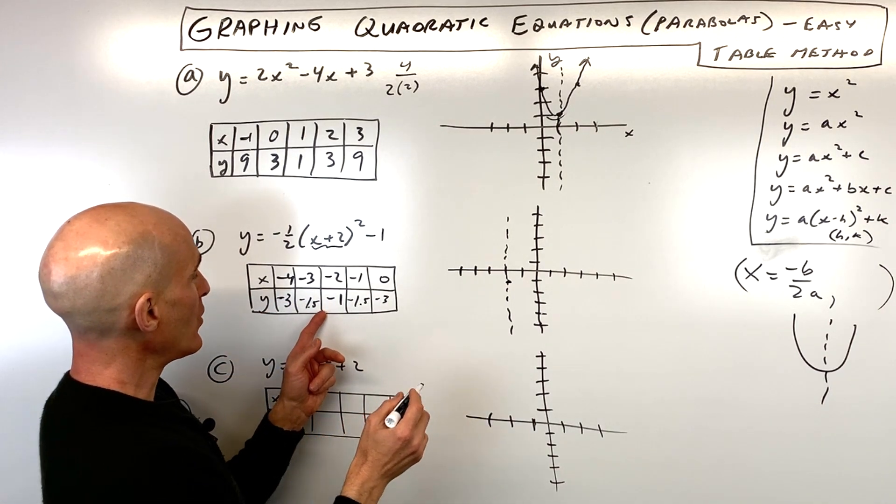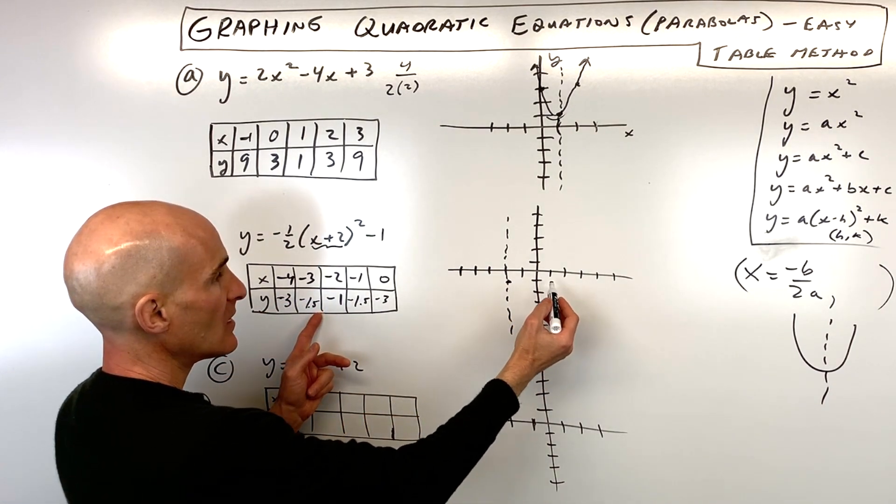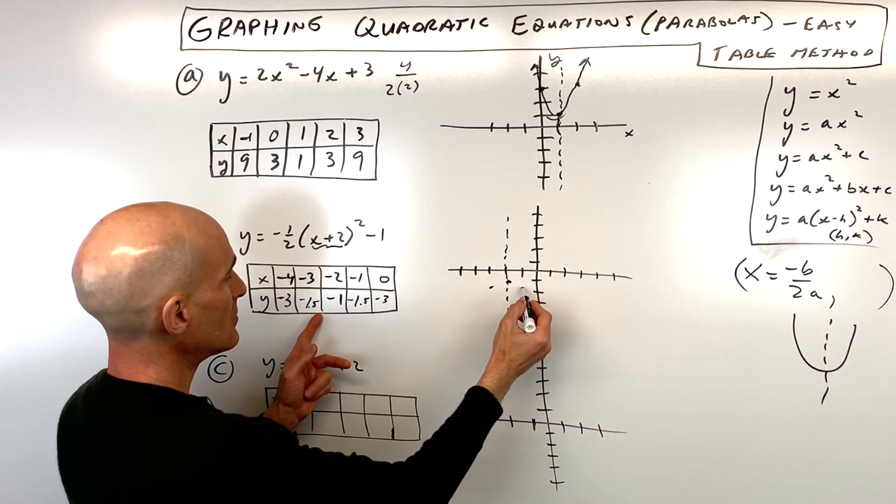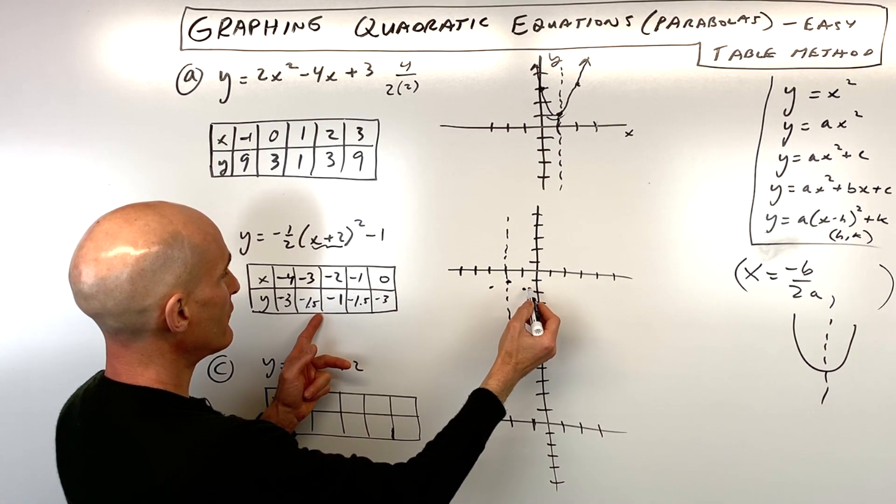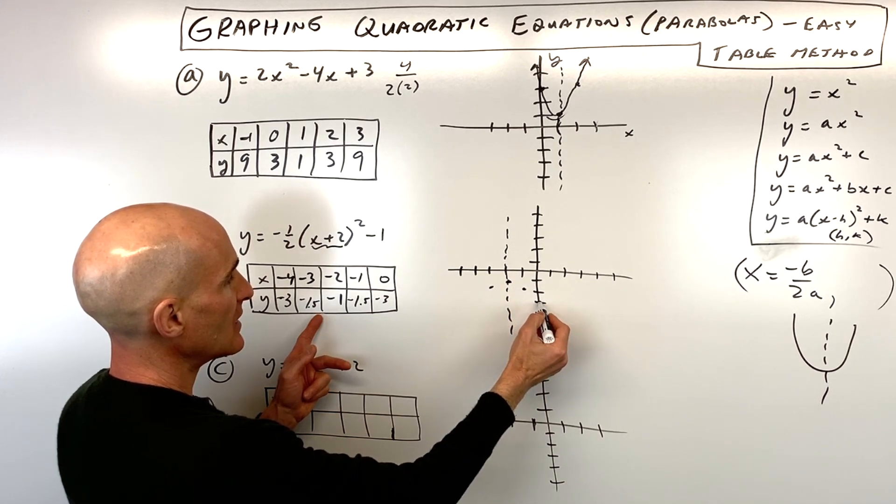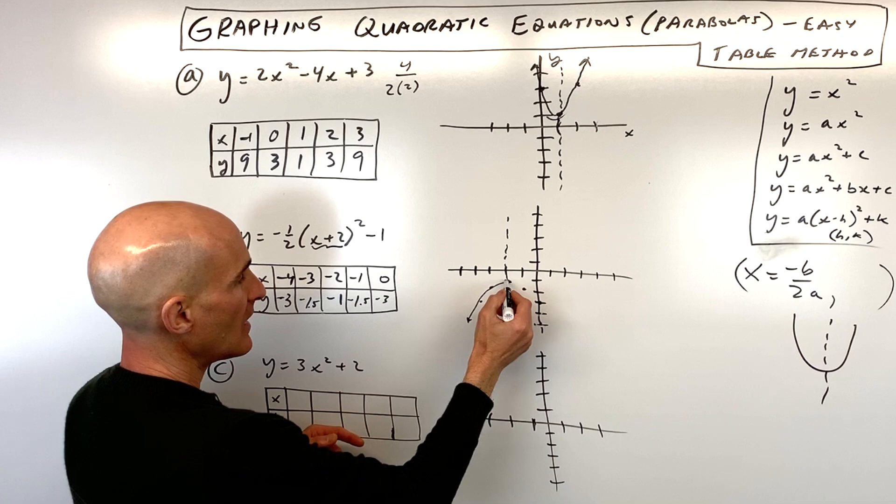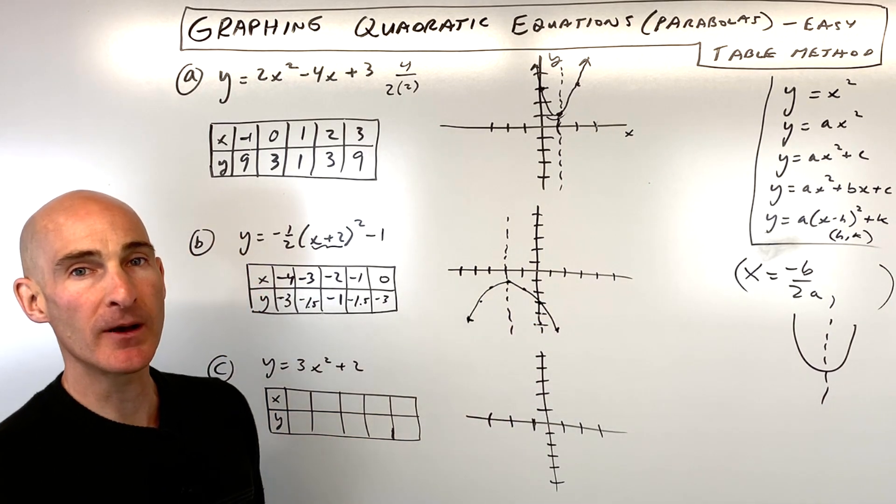So if we go ahead and plot these points now, we get negative 3, negative 1.5, which is right here. And negative 1 is also negative 1.5. Zero is down here at negative 3. And same thing over here, negative 3, since it's symmetric. And then you can see we've got a pretty good sketch of our parabola.